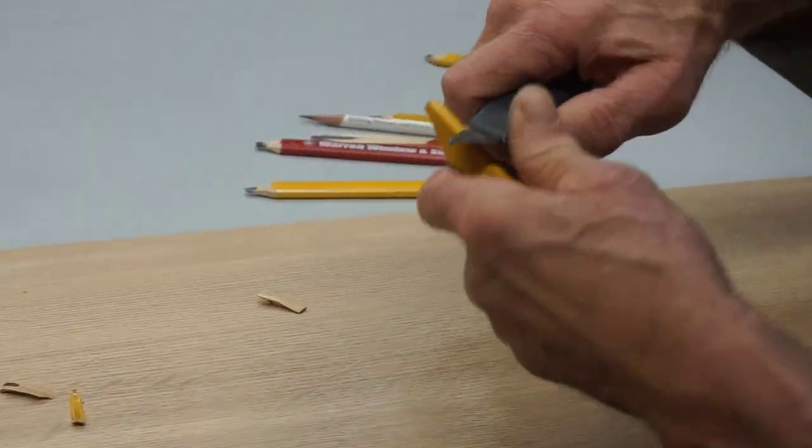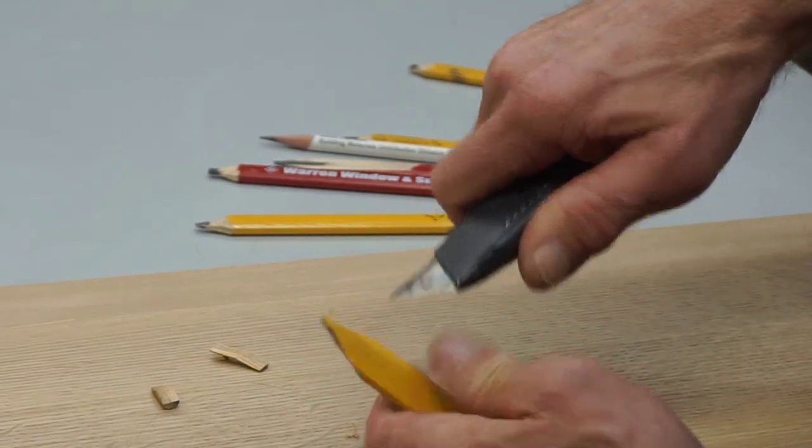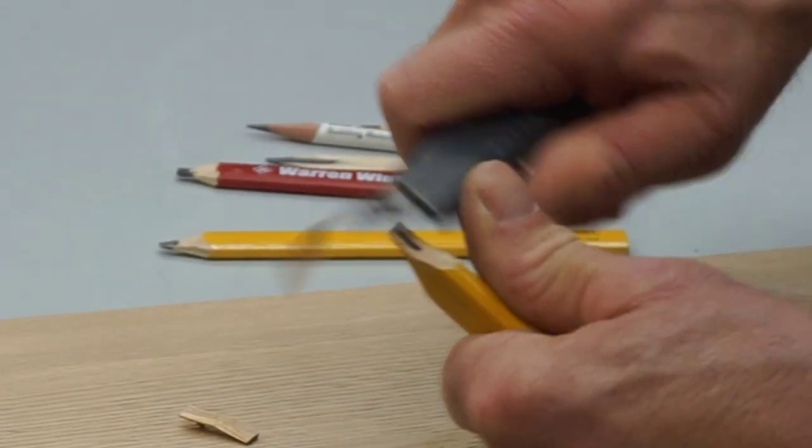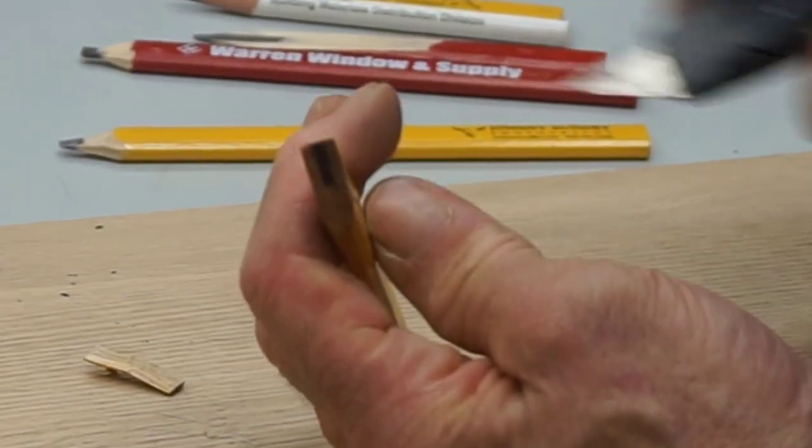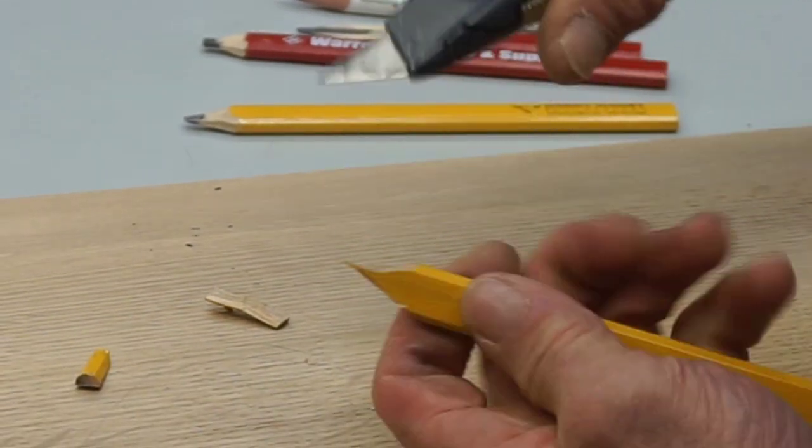With the one edge pared down, I'll sharpen the other side which doesn't need to start as far back on the pencil. This time we just kiss the lead and give it a sharp point. You can see how it's razor sharp, but the tip doesn't snap off because of the wood on each side.